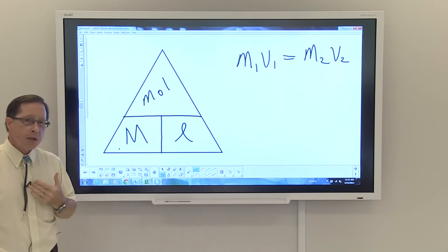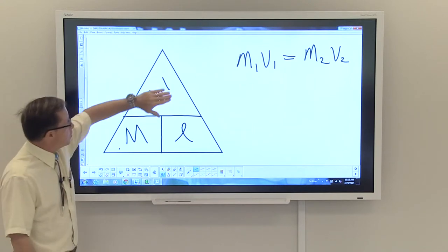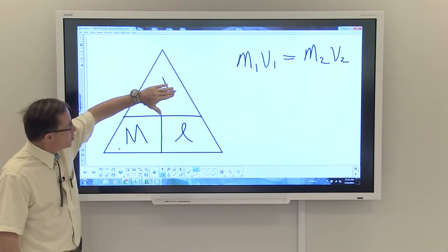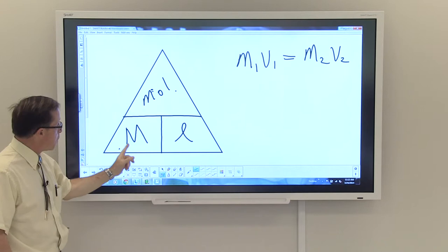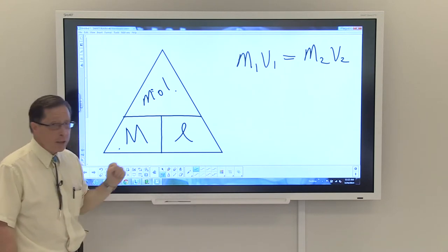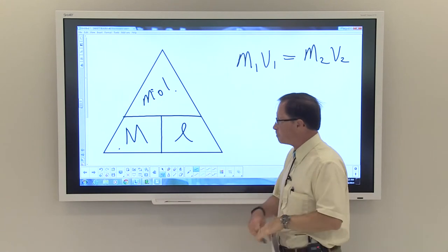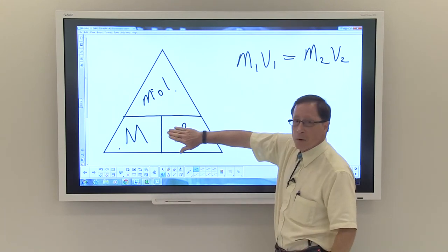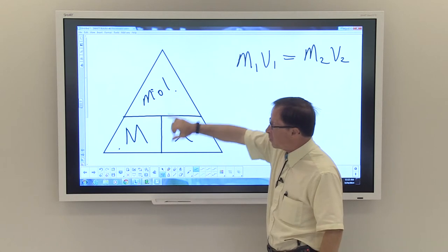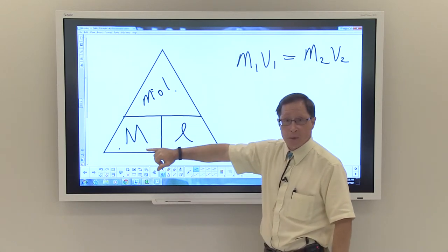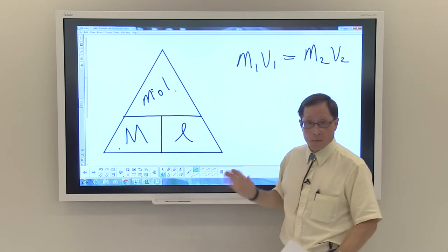If you wanted to calculate the number of moles that are in the solution, if you cover up moles, essentially what it's telling you to do is to multiply molarity times liters. And if we were interested in the volume, you would cover up volume, and you would determine that molarity divided—I'm sorry—moles divided by molarity would give you your volume.